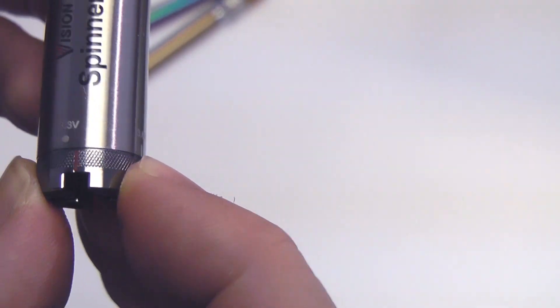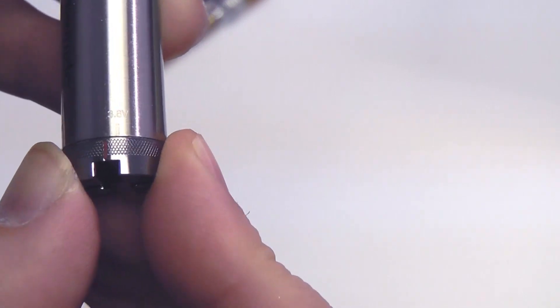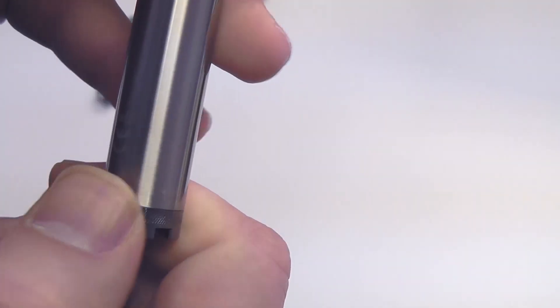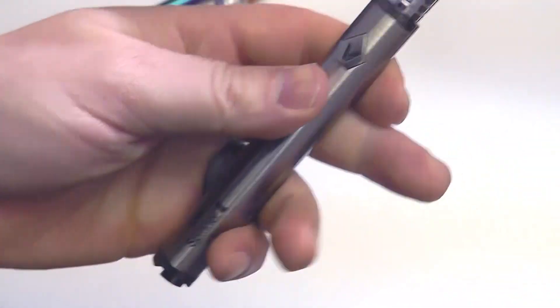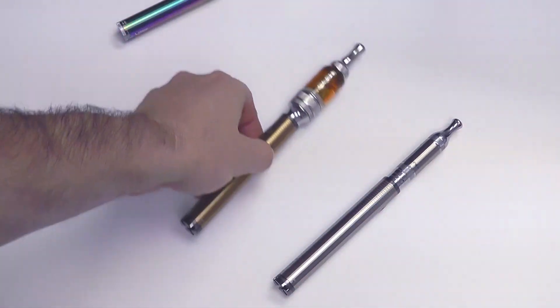If I set that at 3.7 and I had it in my pocket and it started turning by accident, the worst that could happen is it could go down to 3.3 or it could go up to 3.8. It'll lock in at that point and it's not going to go any further. So it's just a little bit of added protection for you, and it's some feedback they're working off of from customers and suppliers in the industry. It's great of Vision to show that they're listening and giving the people what they want.